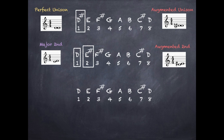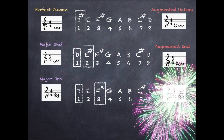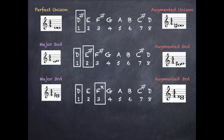For an augmented third, first work out a major third. We go from the first note, which is D, to the third note of the major scale, which is F sharp. To make an augmented third, sharpen the top note of the major third — F sharp needs to become F double sharp. Remember, that symbol is an X.